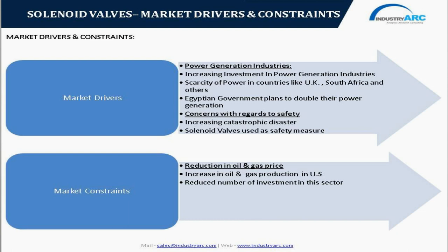As a preventive measure, companies across the globe are deploying solenoid valves to prevent catastrophic disasters, including monitoring leakage of harmful chemicals and radioactive materials. However, one major challenge is the drop in oil and gas prices driven by increased production in the United States, which has forced companies to reduce investment, cancel drilling projects, and reduce operating rigs. This is a major constraint for solenoid valve manufacturers, as oil and gas is a key industry for this market, and cancellation of projects reduces demand significantly.